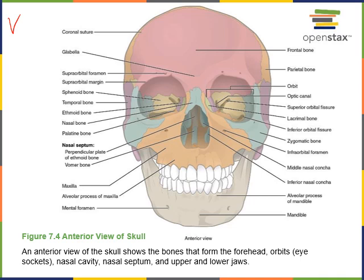V for Virgil stands for vomer. The vomer is found at the inferior of the nasal septum — it's a plow-shaped bone. C stands for inferior nasal concha. The middle nasal concha and superior nasal concha are part of the ethmoid bone, which is a cranial bone. The inferior nasal concha is a facial bone, and there are left and right, so there are two inferior nasal conchae, but only one vomer.